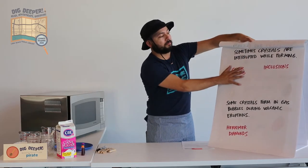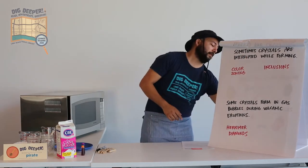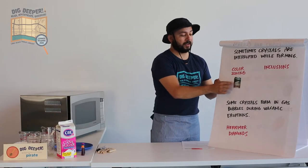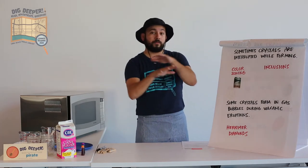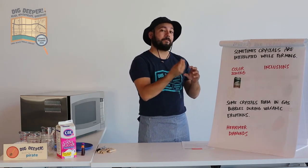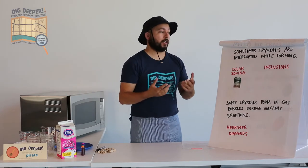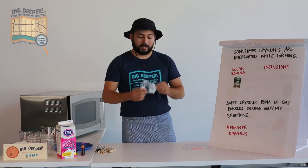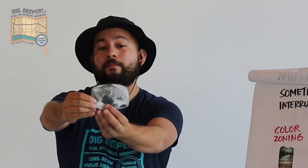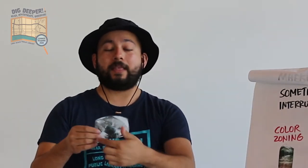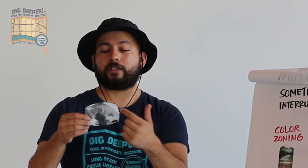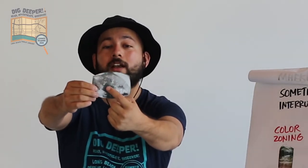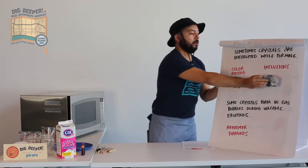Sometimes crystals are interrupted while they're forming, and what ends up happening is that we get these interesting different patterns. You'll see that the very top of this crystal is kind of greenish, the middle is a little bit more on the yellow side, and the very bottom is pink. That's called color zoning. What happens is that the top crystal started to form, the earth moved a little bit or more magma flowed in with a different mineral, and it attached to that first one — but because it was a different mineral, it has a different color. Another thing that can happen is inclusions — when a crystal begins to form, but then the crust moves or more magma flows in, and a whole other crystal forms around that original crystal. There's a dark spot in the middle — that's an inclusion of one mineral within another mineral.